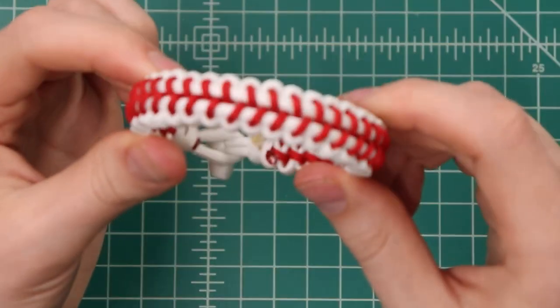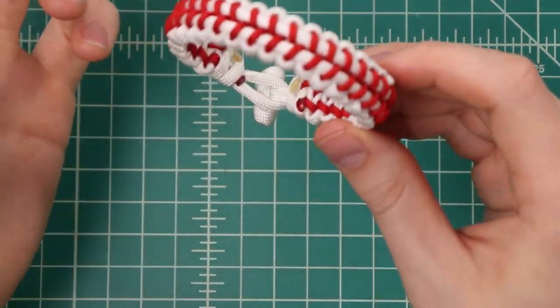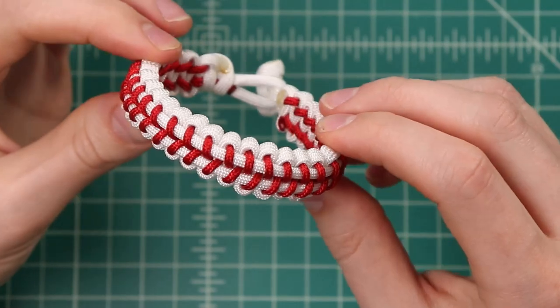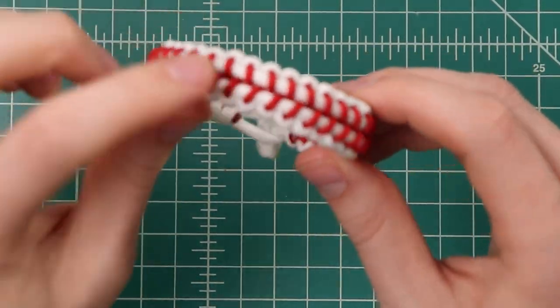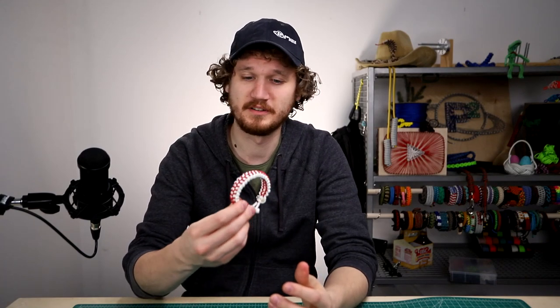So there's our finished baseball stitch bracelet. There's a couple other varieties of this bracelet. I think we have a fishtail one that was made on our channel quite a while ago. But I think I like this best of any that I've seen so far. It looks the most like an actual baseball stitch. So let me know what you think down in the comments. And as always, we'll put links to the supplies down in the description. Thanks for watching guys and we'll see you next time.